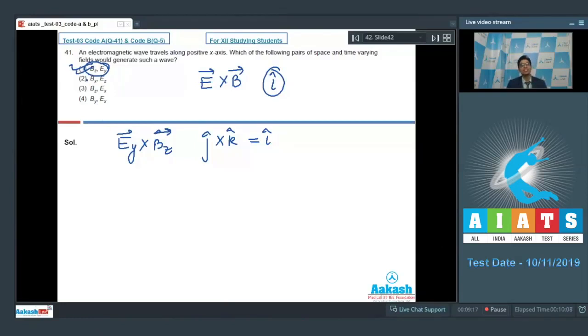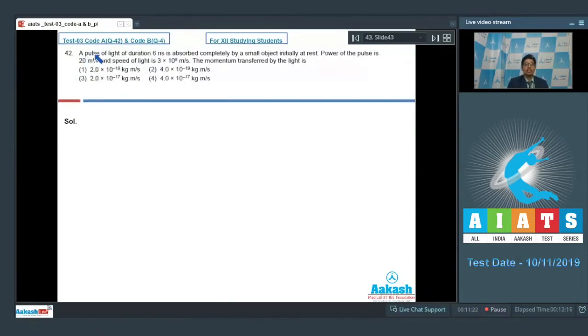Let us proceed to question number 42. A pulse of light of duration 6 nanoseconds is absorbed completely by a small object initially at rest. Power of the pulse is 20 milliwatts and speed of light is 3×10^8 meters per second. The momentum transferred by the light is: